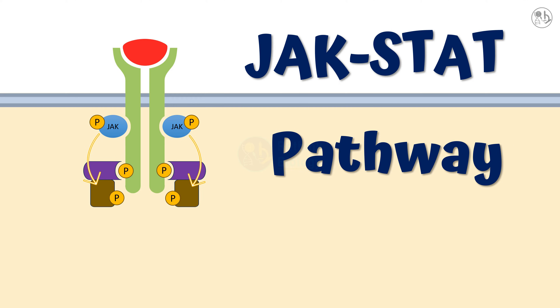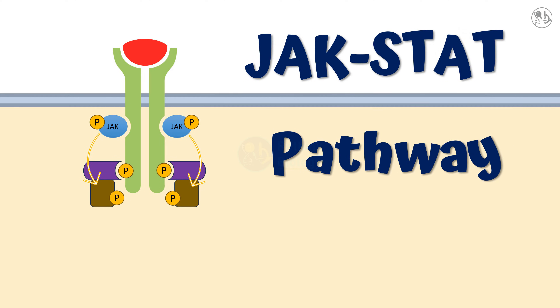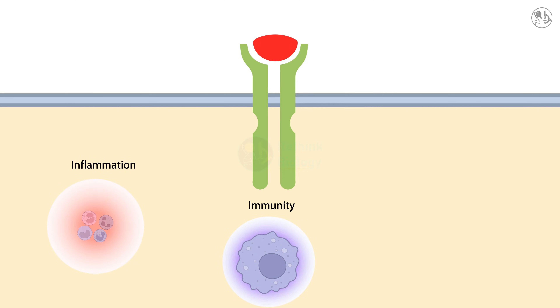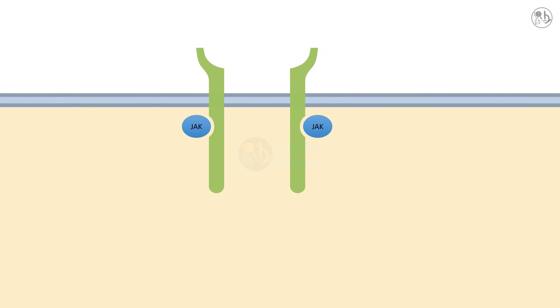Hello and welcome to our new video on the JAK-STAT signaling pathway. The JAK-STAT signaling pathway is a way for cells to respond to cytokines, which are molecules that regulate inflammation, immunity, and other processes. Cytokines bind to receptors on the cell surface, which are made of two or more chains.